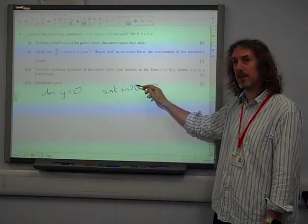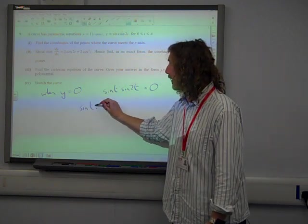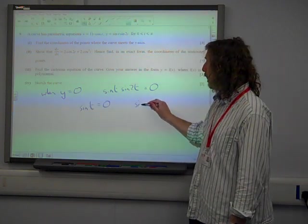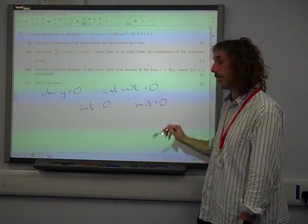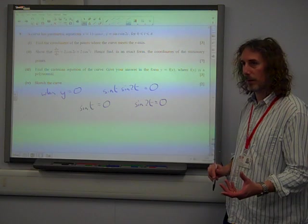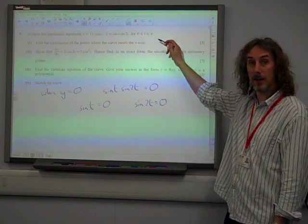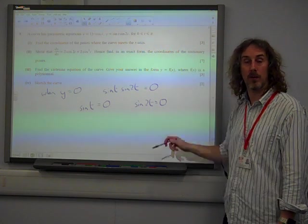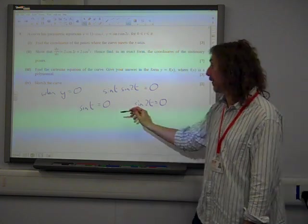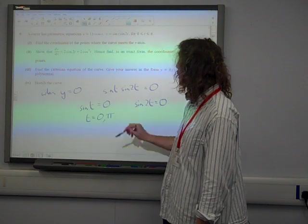This is two things multiplying to give an answer of 0, which tells us that either sine t is 0 or sine 2t is 0. Which doesn't feel like it's two equations, but we need to think carefully about this. Sine t being 0 for t between 0 and pi, well that does give us two values, doesn't it? That gives us the values t equals 0 and pi.